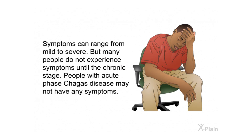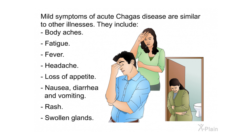Symptoms can range from mild to severe, but many people do not experience symptoms until the chronic stage. People with acute phase Chagas disease may not have any symptoms. Mild symptoms of acute Chagas disease are similar to other illnesses and include body aches, fatigue, fever, headache, loss of appetite, nausea, diarrhea and vomiting, rash, and swollen glands.